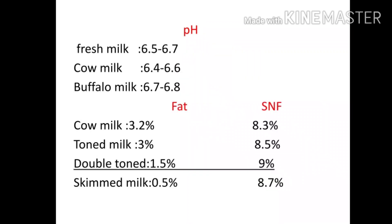The pH of fresh milk is 6.5 to 6.7. Cow milk pH is 6.4 to 6.6 and buffalo milk pH is 6.7 to 6.8.